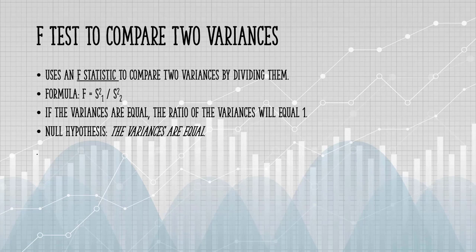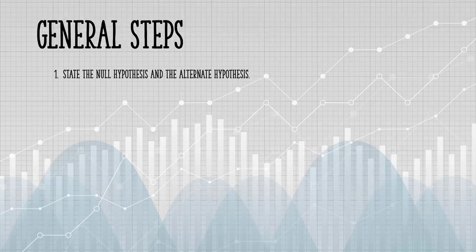Some general steps: State the null hypothesis (the variances are equal) and the alternate hypothesis (the variances are not equal).